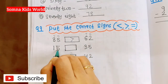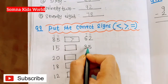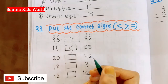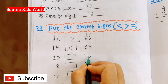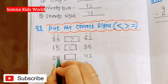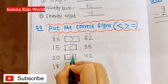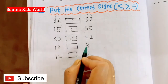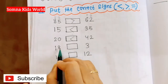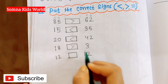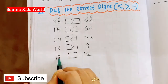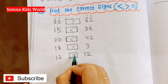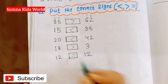Continuing the comparison signs: 18 and 3 — 18 is greater. For 12 and 12 — both sides are the same, so the sign is equals to. That completes the greater than, smaller than, and equal to section.